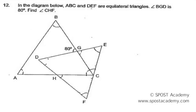In the diagram below, ABC and DEF are equilateral triangles. Angle BGD is 80 degrees. Find angle CHF.